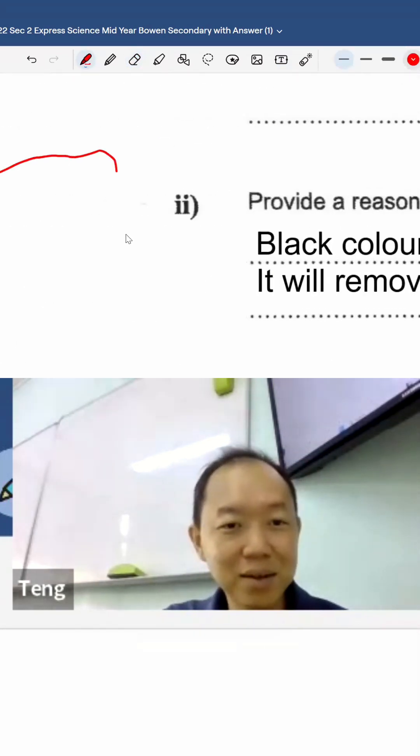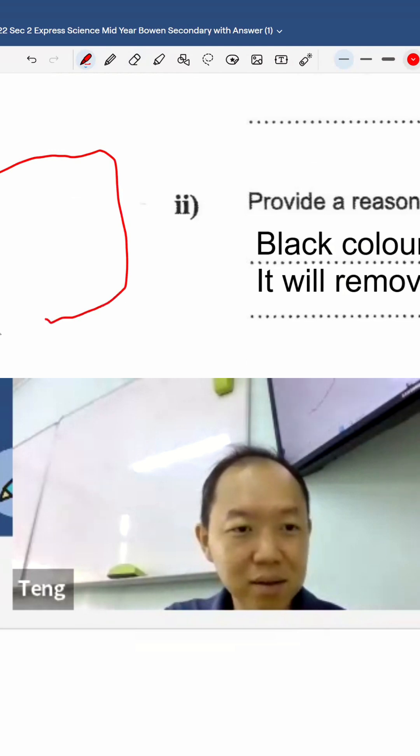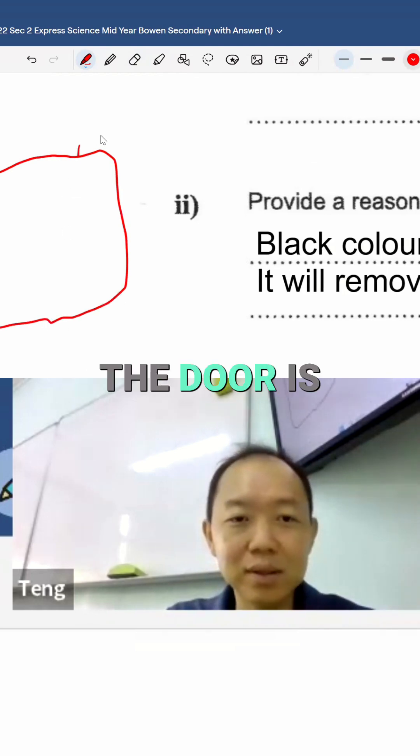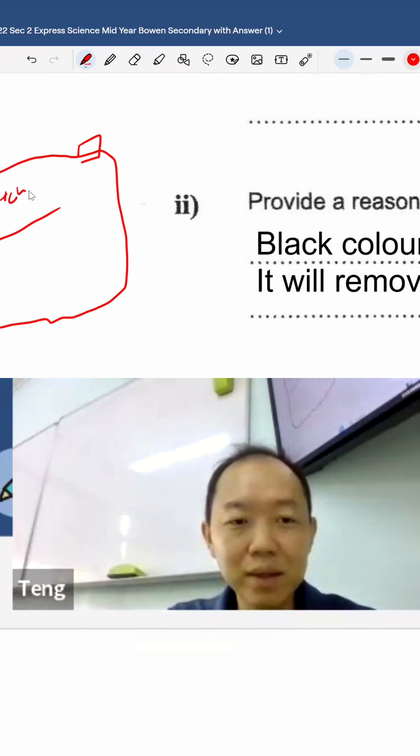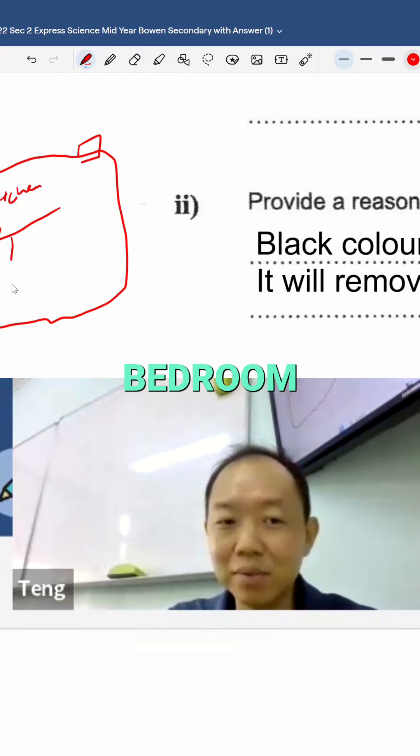Suppose the house is like that. Okay, then maybe the door is here and maybe the kitchen is here. Kitchen, right? Then maybe you put a fridge over here, and then there's like a bedroom somewhere like that.